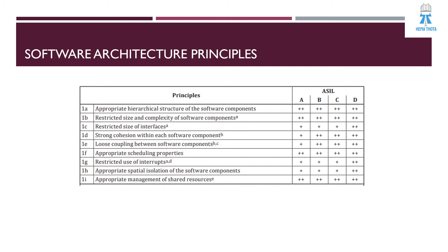Coming to principle 1c — restricted size of interfaces — the same limited size of interfaces should be maintained. We need to ensure a proper balance between external interfaces and freedom from interface interference (FFI). There should be clear isolation between design elements except at their interfaces. However, the interface size restriction is highly recommended in the case of ASIL D only.